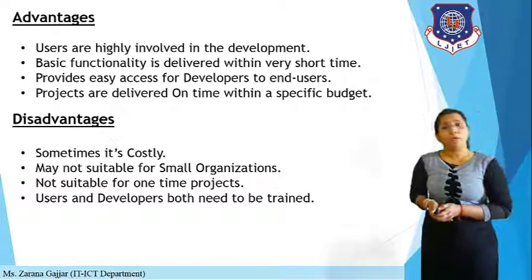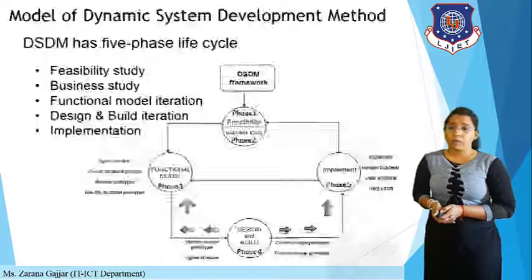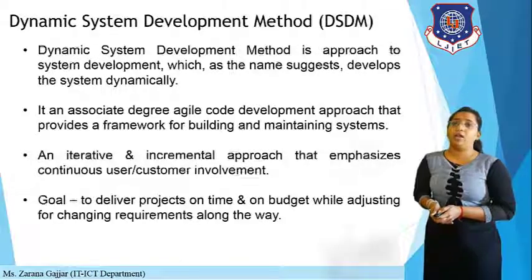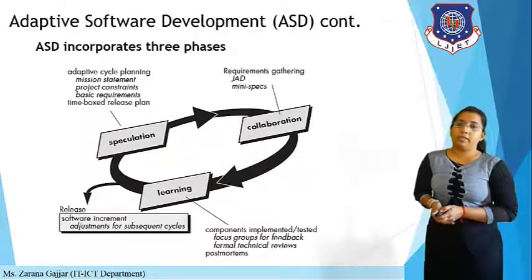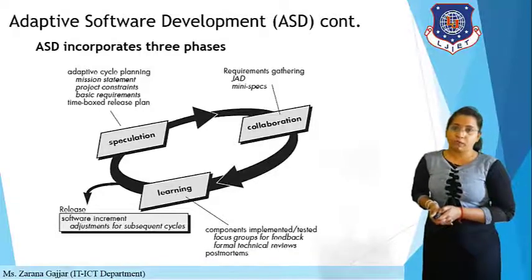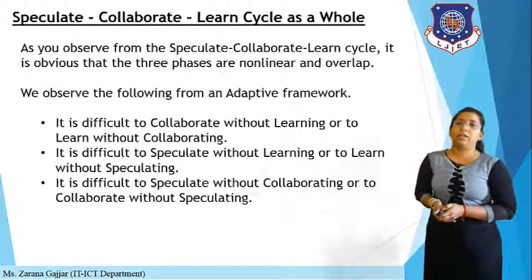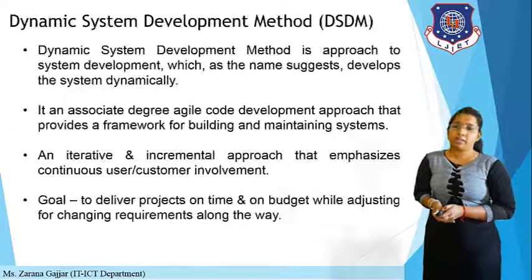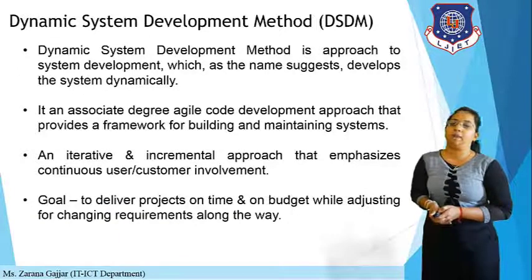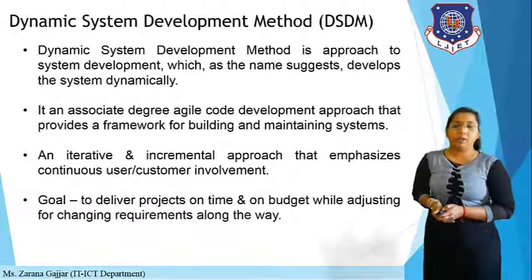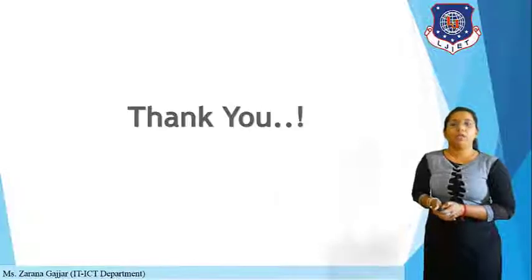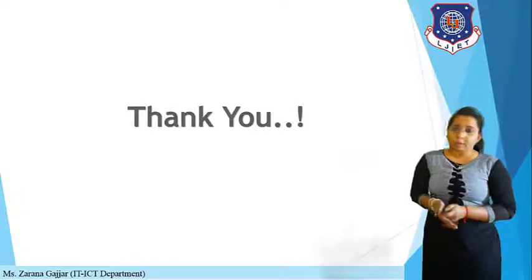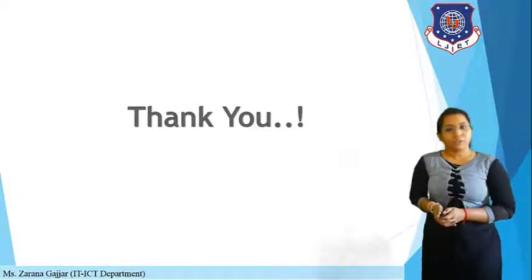In today's lecture, we completed two more agile software process models: ASD — Adaptive Software Development — and DSDM — Dynamic System Development Method. In the next lecture, we will continue with another agile process model. Thank you.